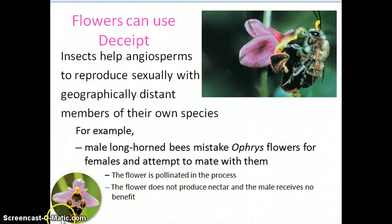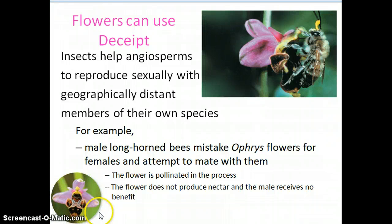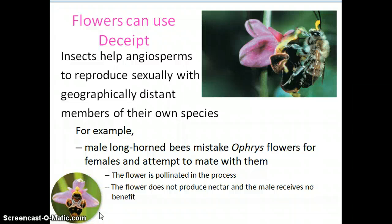has evolved, as you can see here, to look like a female longhorned bee — at least to the male longhorned bee it looks like a female. By having this type of structure, this flower is able to take advantage of the male longhorned bee, bringing pollen from a geographically distant member of the ophris flower species. These insects help angiosperms reproduce sexually and have diverse genetics by enticing them to come from a distance.